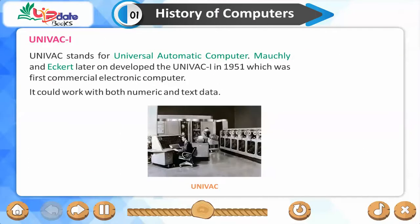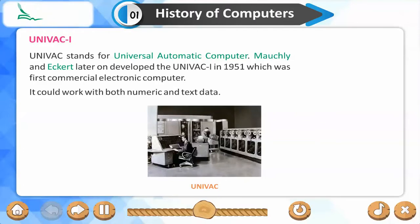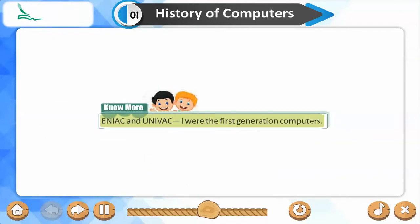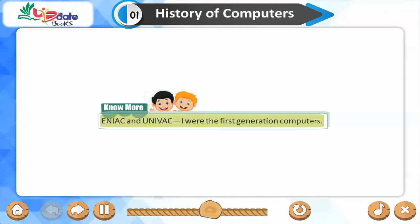UNIVAC1. UNIVAC stands for Universal Automatic Computer. Mauchly and Eckert later developed the UNIVAC1 in 1951, which was the first commercial electronic computer. It could work with both numeric and text data. ENIAC and UNIVAC1 were the first-generation computers.